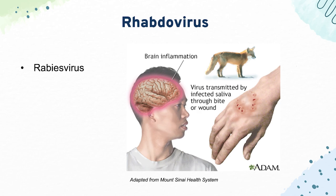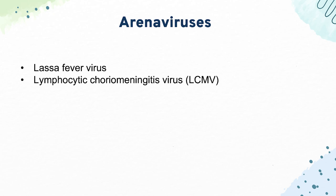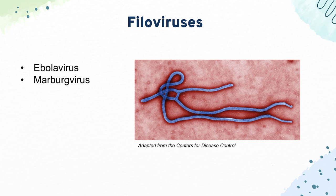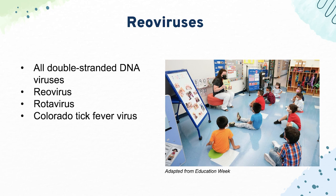Next are our arenaviruses: Lassa fever virus, whose main reservoir is rodents; and lymphocytic choriomeningitis virus (LCMV), which causes meningoencephalitis, also from rodents. For filoviruses, we have Ebola virus and Marburg virus — both cause hemorrhagic fever and are usually fatal. Finally, reoviruses are all double-stranded RNA viruses, which is high yield as it separates them from other single-strand viruses. Reovirus and rotavirus both cause diarrheal illness in preschools and cruise ships. Colorado tick fever virus is also a reovirus but less high yield.